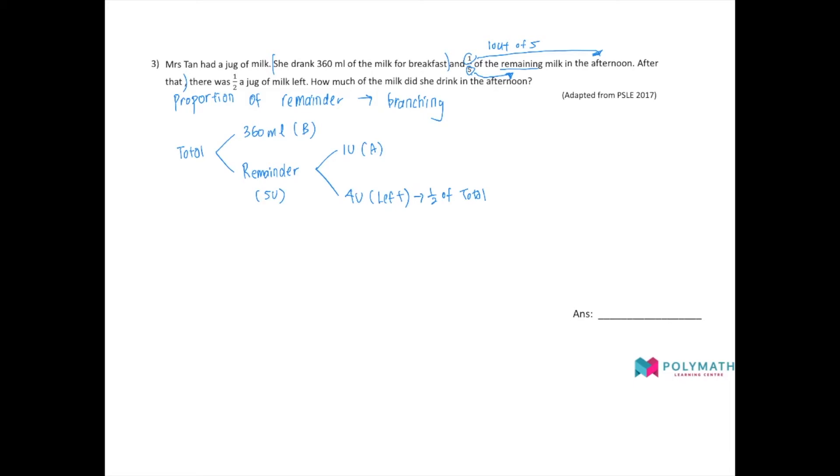I have four units of milk left and that is half of the total. When we take half multiplied by two, we'll get one whole. That means we will get the total number of units. We have four units multiplied by two. Eight units is actually represented by the total. So the total at first is eight units.